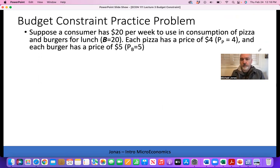That's one of our assumptions with the budget constraint. We only have an X and Y good, in this case pizza and burgers. You'll be given the price of each good as well. Each slice of pizza has a price of $4, each burger a price of $5.